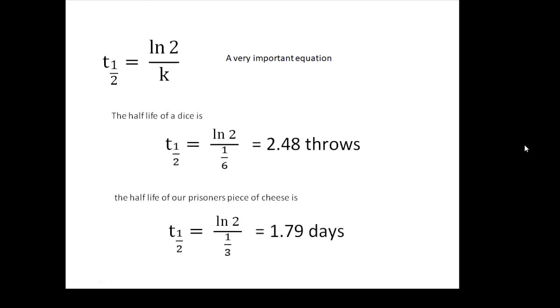In my last video, there were a few examples. We can work out the half-life of a dice now. The half-life of a dice would be log 2 divided by a sixth, which is 2.48 throws. A dice should last, on average, about two and a half throws. And our prisoner with his piece of cheese, after how long will half of it be left? It'll be after 1.79 days, half of his cheese will be left. So Tuesday evening, I think.